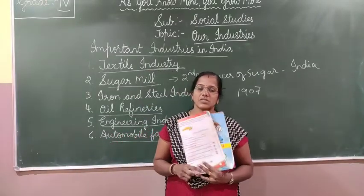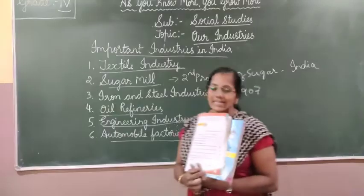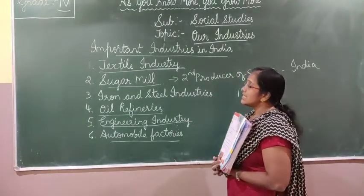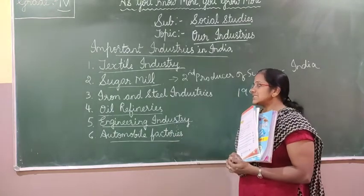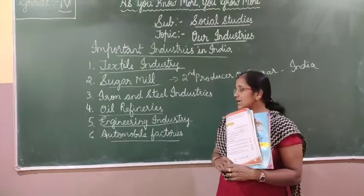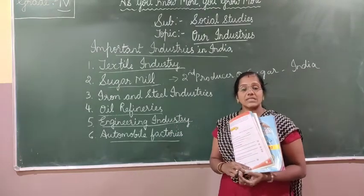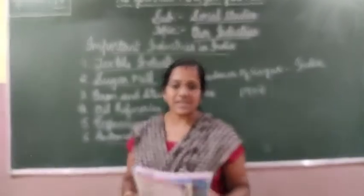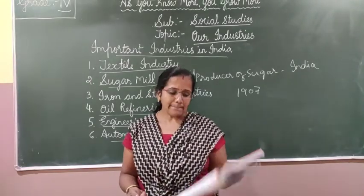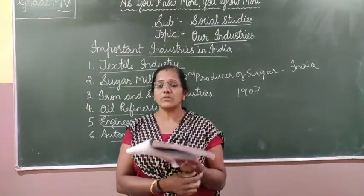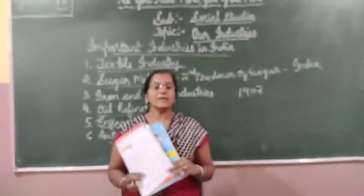So these are some of the important industries in India: textile industry, sugar mills, iron and steel industries, oil refineries, engineering industry, and automobile factories. Apart from these, there are many other industries like cement, paper, fertilizers, electronic goods, plastics, and computers — all are important industries in India.